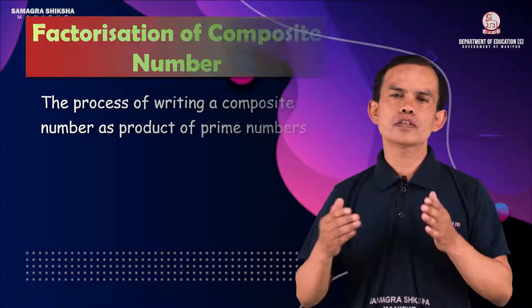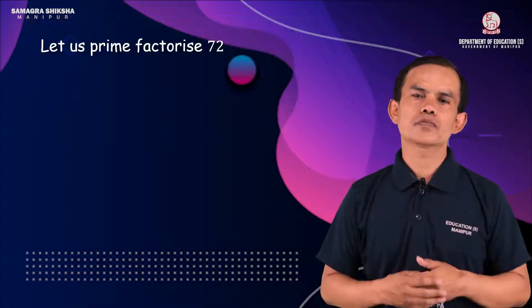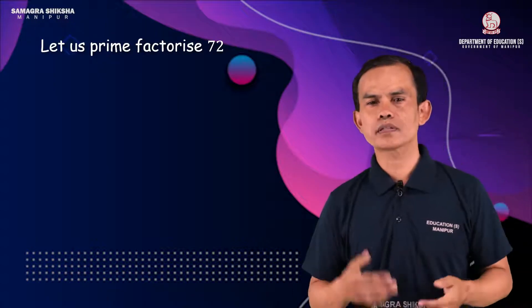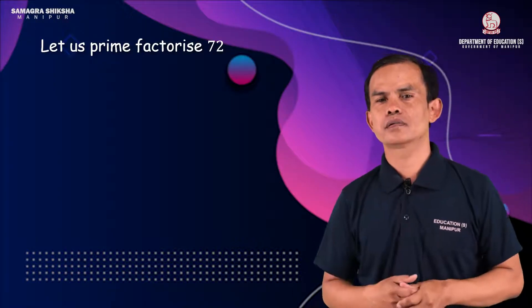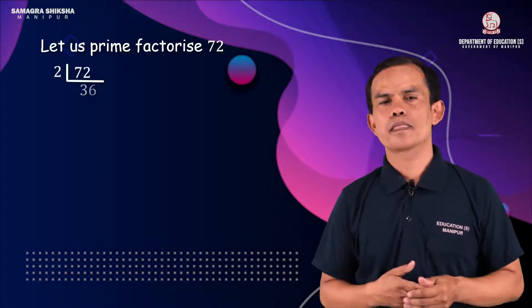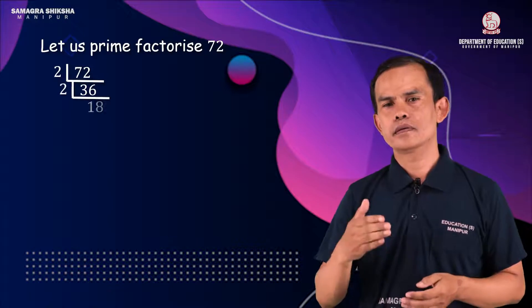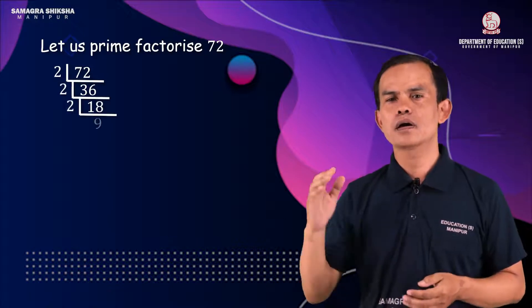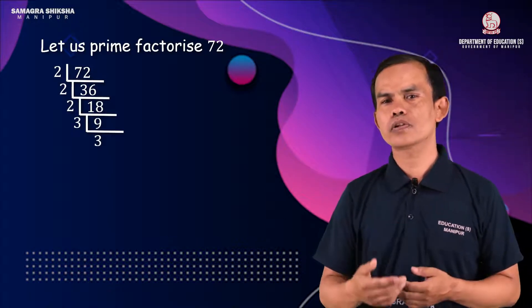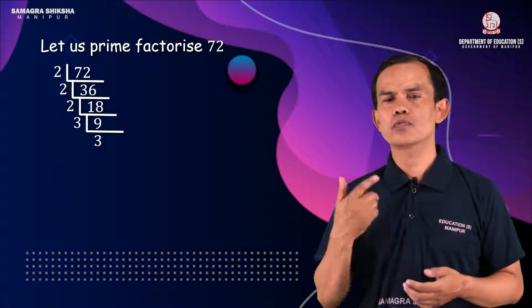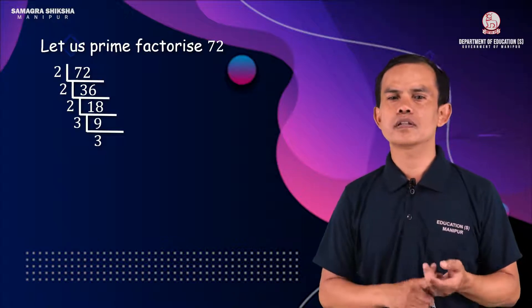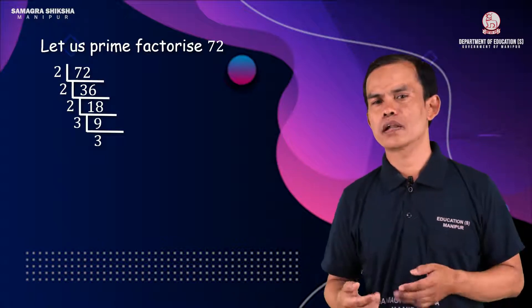When we factorize the number 72: 72 divided by 2 is 36, then divided by 2 is 18, then divided by 2 is 9, then divided by 3 is 3, then divided by 3 is 1.